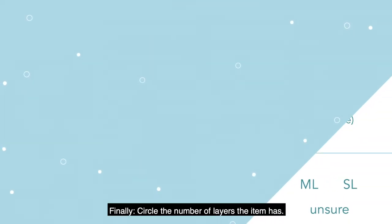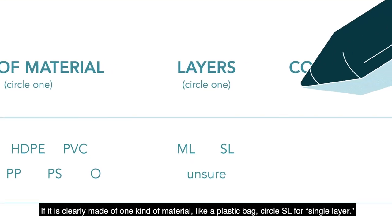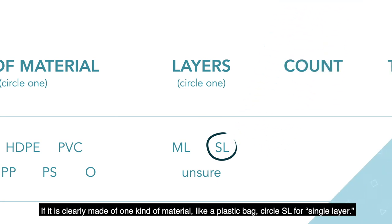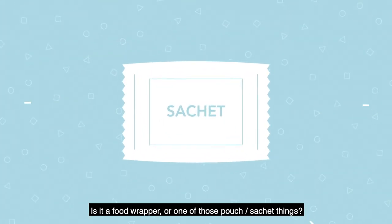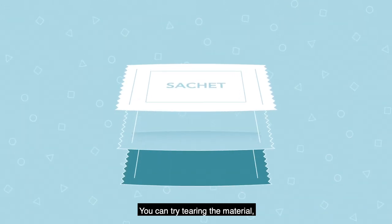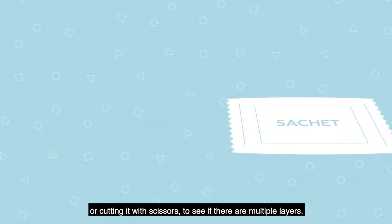Finally, circle the number of layers the item has. If it is clearly made of one kind of material, like a plastic bag, circle SL for single layer. Is it a food wrapper or one of those pouch sachet things? Those are usually multi-layer. You can try tearing the material or cutting it with scissors to see if there are multiple layers.